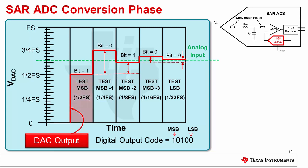Stepping through the conversion: the MSB does not exceed the analog input, so we keep this bit and set its binary value to 1. The next bit test, MSB-1, does exceed the analog input, so it is turned off — binary 0. MSB-2 does not exceed the analog input, so it is kept on — binary 1. The last two bits both exceed the analog input and are turned off — binary 0. Thus, the overall conversion result for this example is 10100. In following videos, we will revisit this simplified view of the SAR ADC for input drive and voltage reference drive topics.